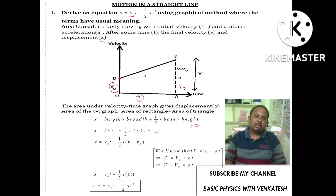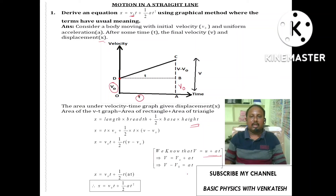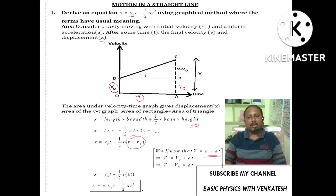From the first kinematic equation, v equals u plus at, replacing u with v-naught: v equals v-naught plus at, so v minus v-naught equals at. Substituting in place of (v minus v-naught): x equals v-naught t plus one-half times t times at, which gives x equals v-naught t plus half a t-squared. This is our given expression.